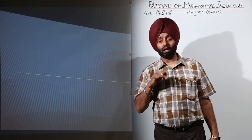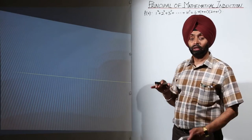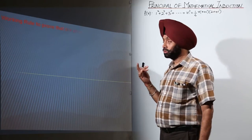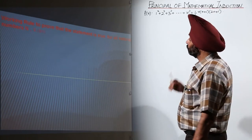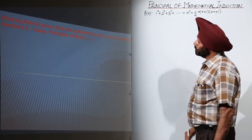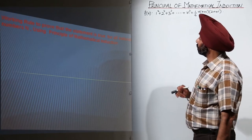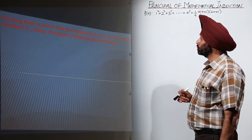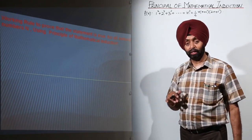Let us go over the working rule for how we are going to solve a question. I am going to tell you step by step. The working rule is to prove that the statement is true for all natural numbers using the principle of mathematical induction.